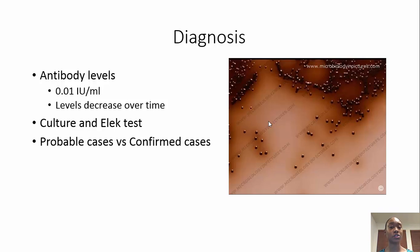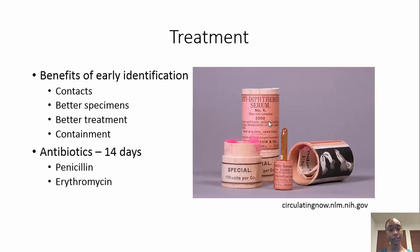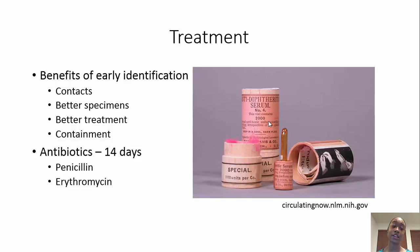An ELISA test is usually also performed to determine whether the bacteria produces toxins. Probable cases are all cases that haven't been confirmed by a culture. Early identification is key to treating any disease — contacts with the infected person can be identified, better specimens can be taken, better treatment can be provided, and the disease can be better contained to prevent it from spreading.